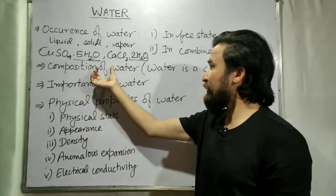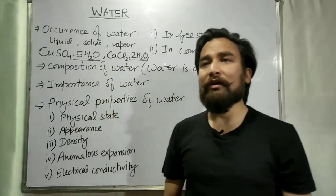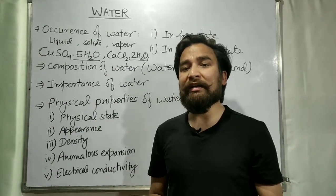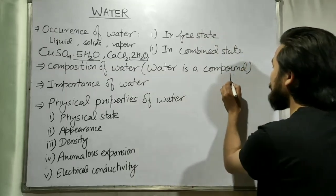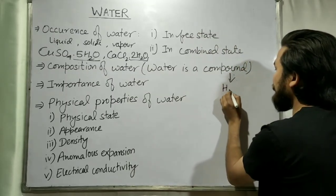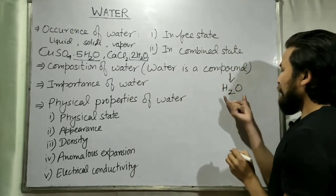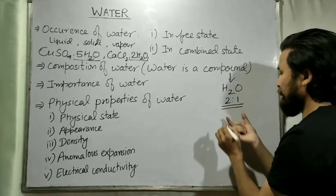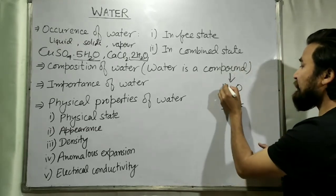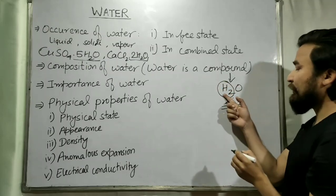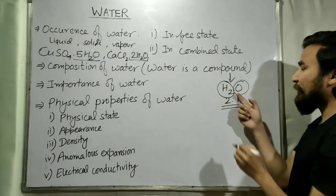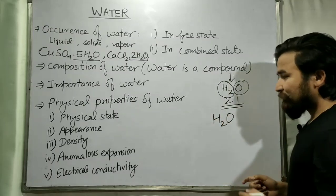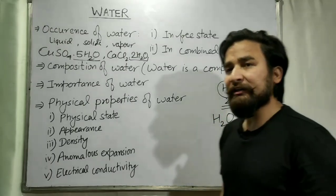The next topic we are going to discuss is the composition of water. Water is a chemical compound which consists of hydrogen atoms and oxygen atoms in the ratio of 2:1. Since water does not have the properties of hydrogen or oxygen, it is a compound, and its chemical formula is H₂O.